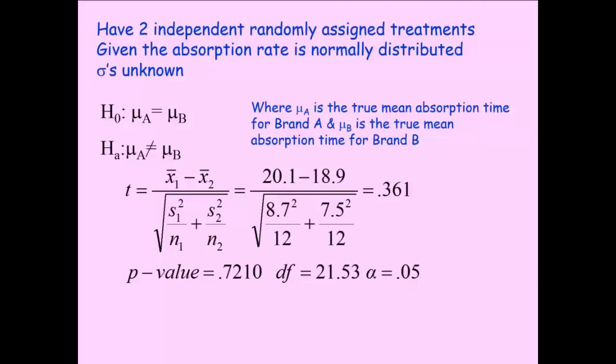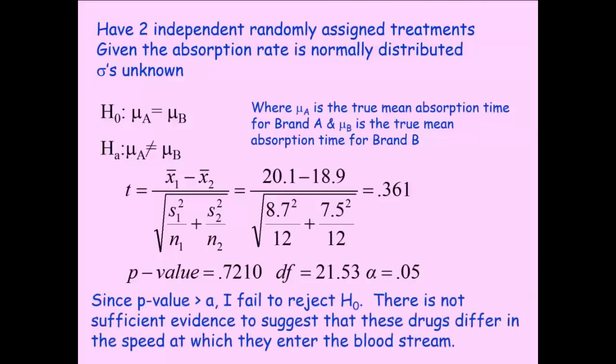So in formal speak, our conclusion would be, since p-value is greater than alpha, I fail to reject the null, there is not sufficient evidence to suggest that these drugs differ in the speed in which they enter the bloodstream.